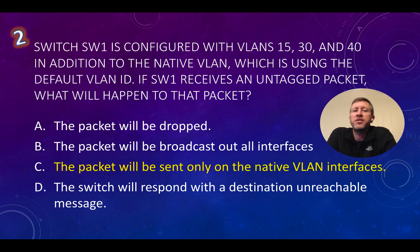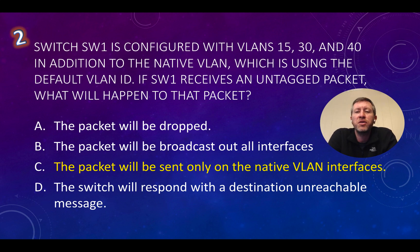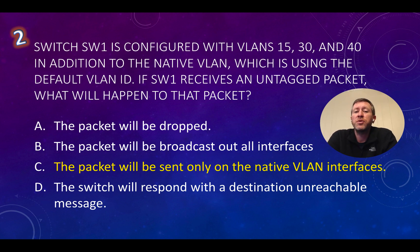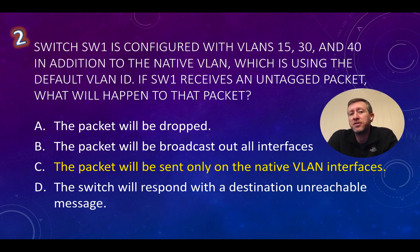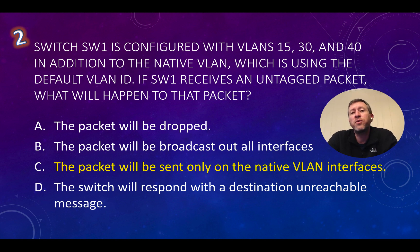Question number two: switch SW1 is configured with VLANs 15, 30, and 40 in addition to the native VLAN, which is using the default VLAN ID. If switch SW1 receives an untagged packet, what will happen to that packet? The native VLAN by default is going to be VLAN 1, and whenever a switch receives a packet that is not tagged, it assumes that it's for the native VLAN.